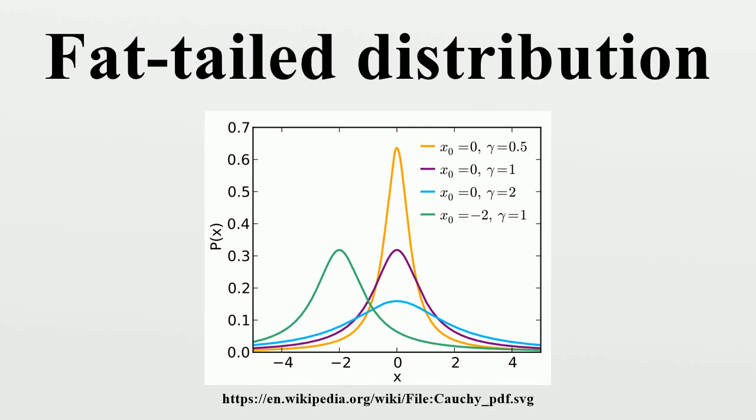A fat-tailed distribution is a probability distribution that has the property, along with the other heavy-tailed distributions, that it exhibits large skewness or kurtosis. This comparison is often made relative to the normal distribution, or to the exponential distribution.